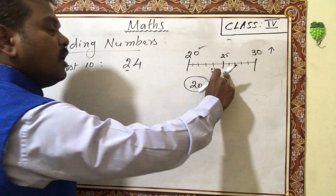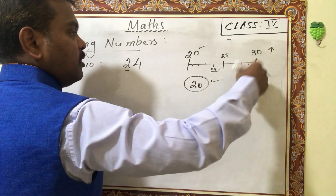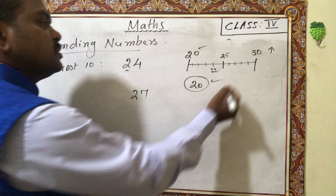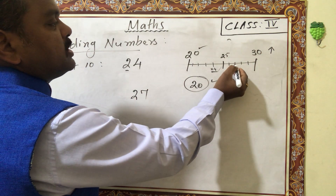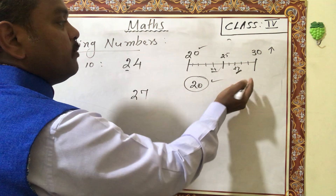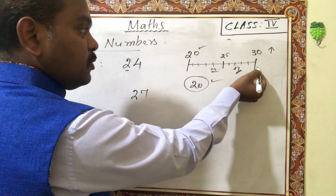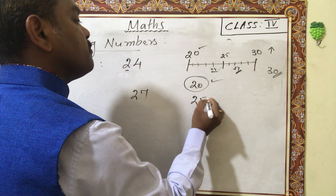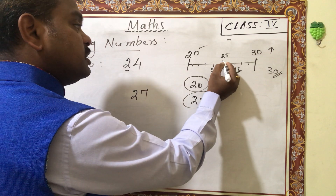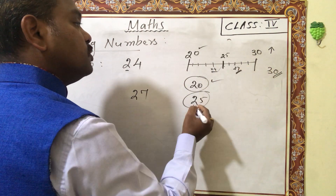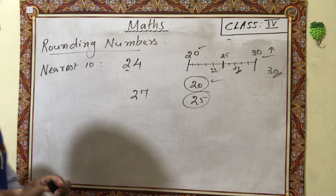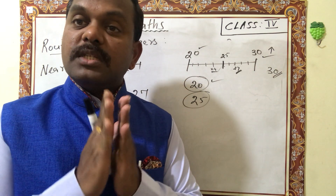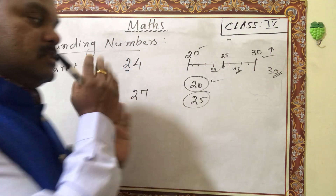If the question is 27, it falls above the midpoint 25, so 27 is more than half — the answer is 30. If the question is 25, the condition is half and more than half, so 25 also rounds up to 30. Summary: if the number is half or more than half, take the larger multiple; if less than half, take the previous multiple.